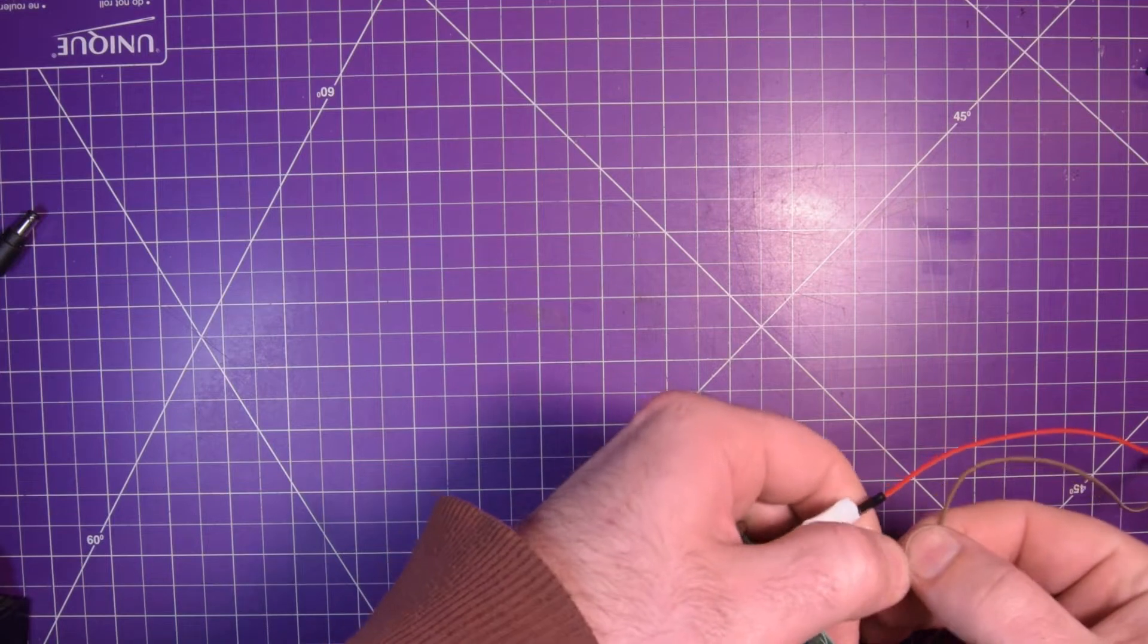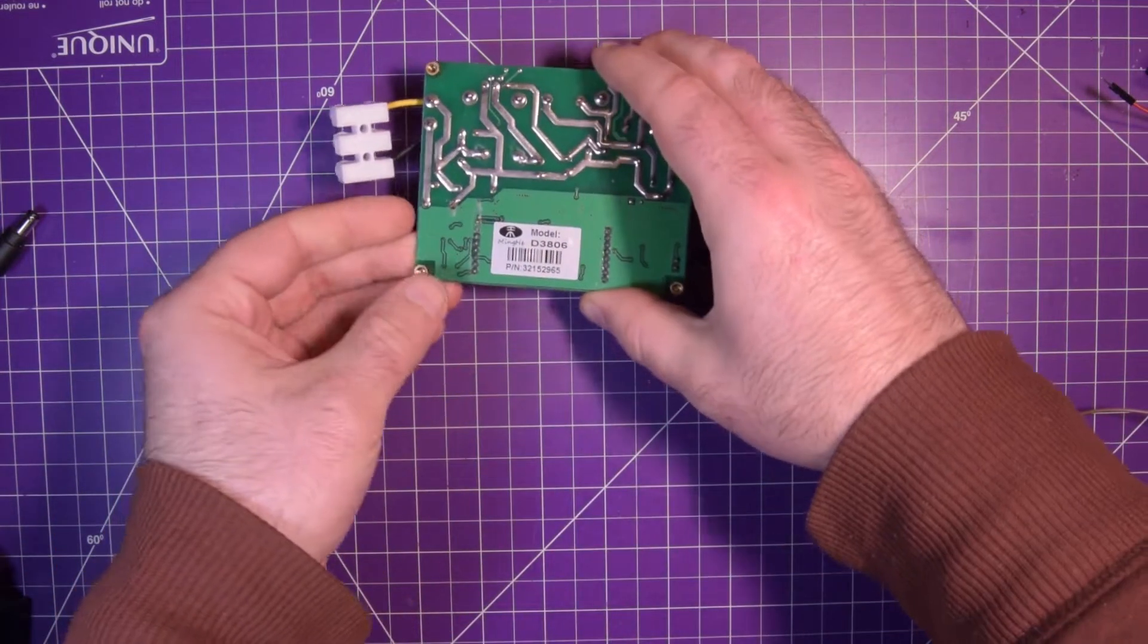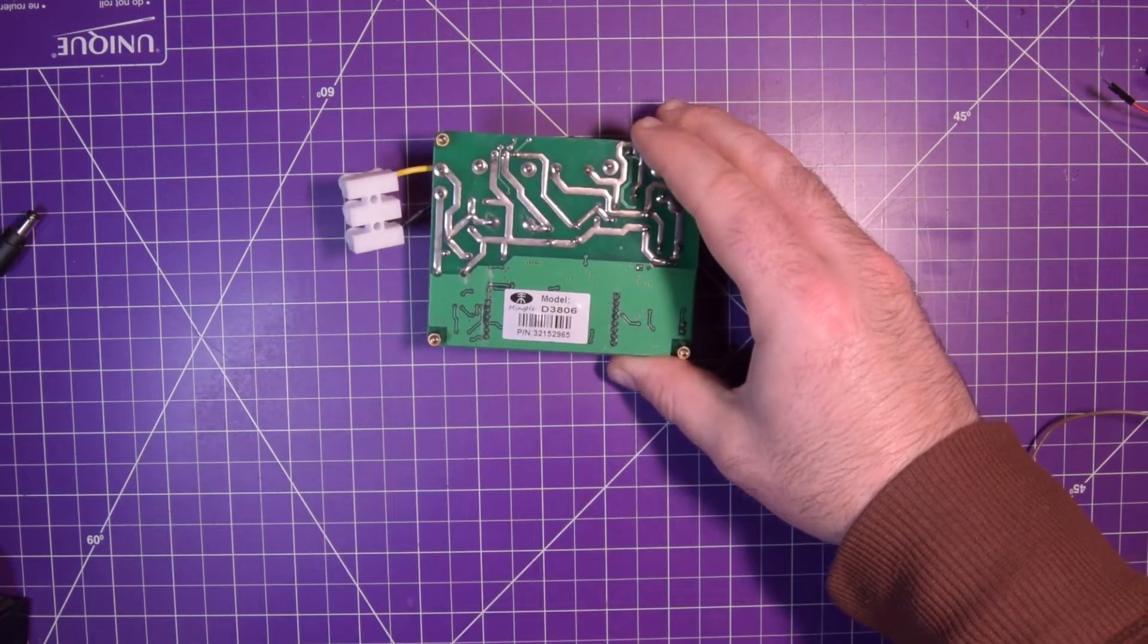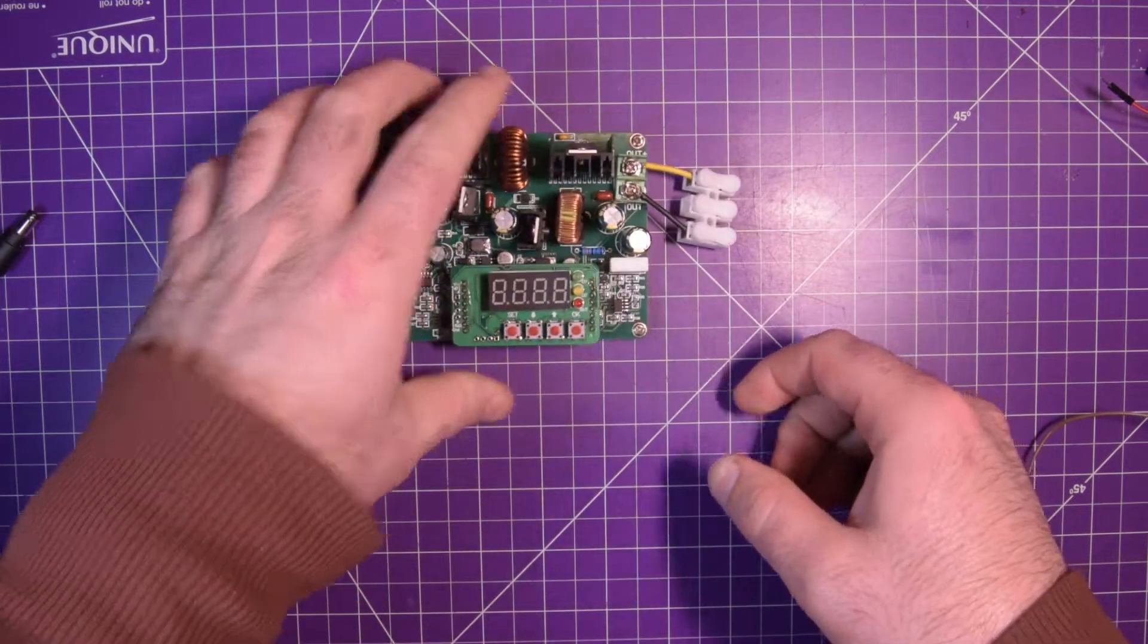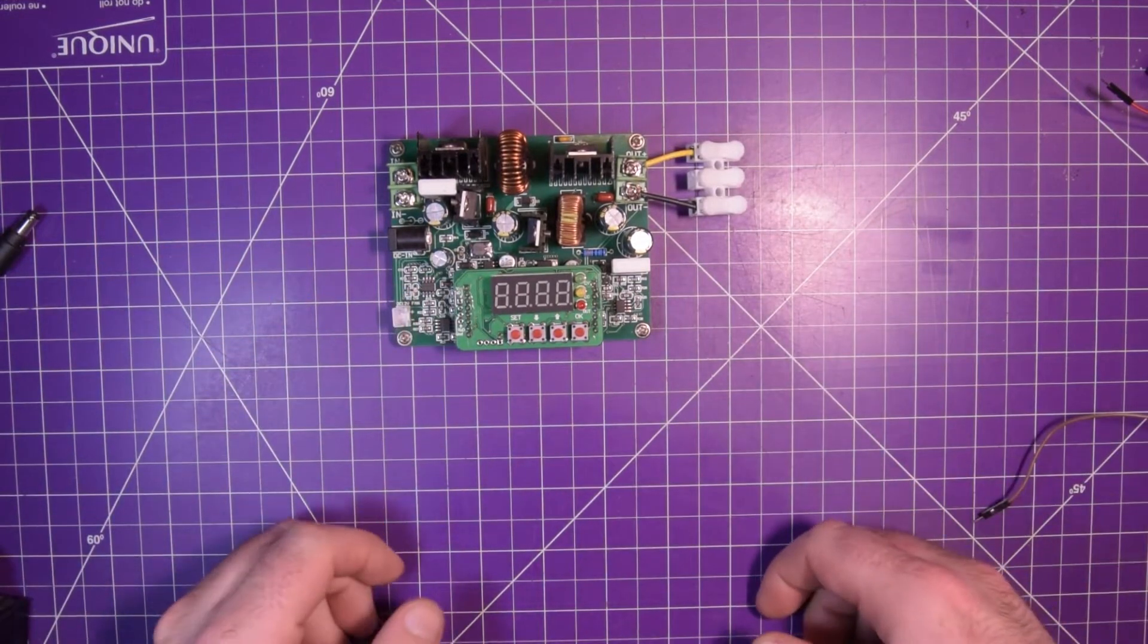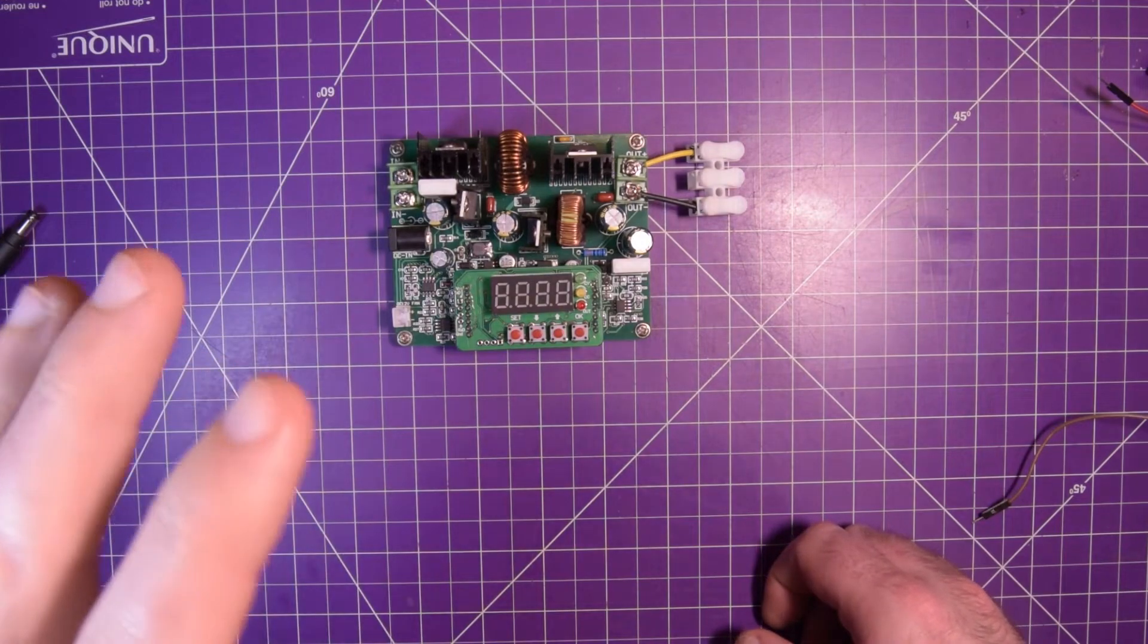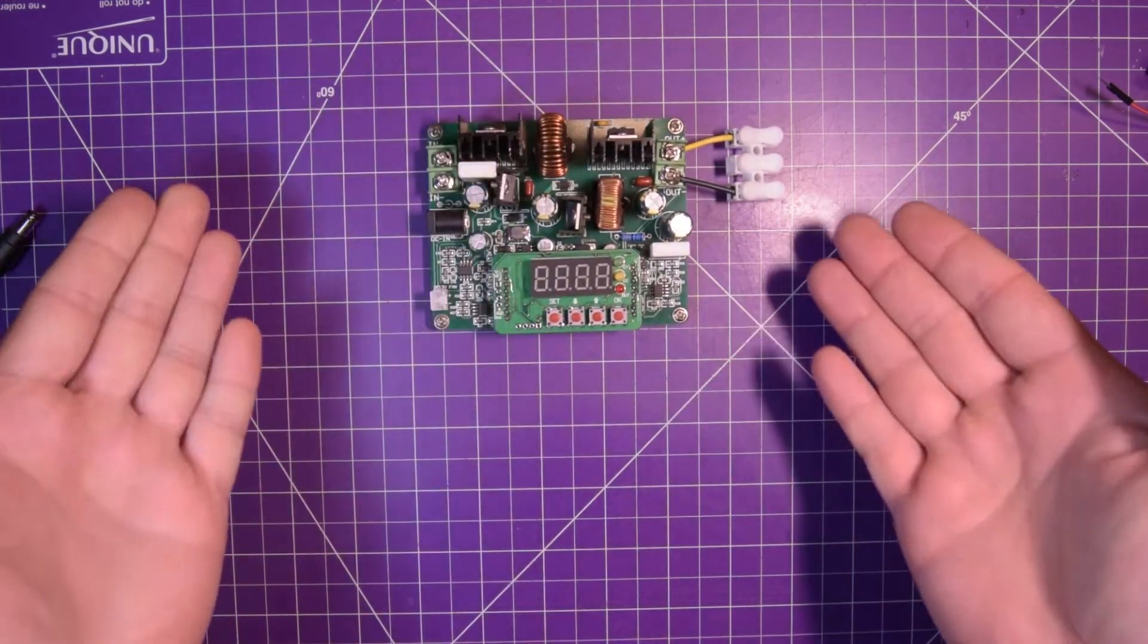I typically use this D3806 module to power my projects. If you just plug D3806 into eBay, you'll end up with this thing. This module is really nice. It cost me about 20 bucks Canadian. If you need something to power your projects, this thing is perfect.